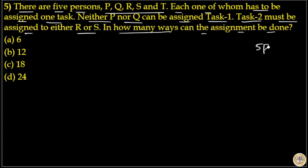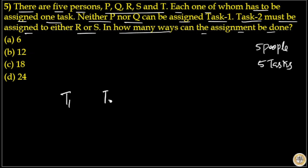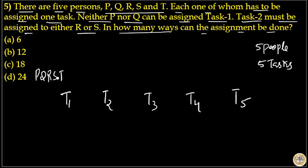Here there are 5 people and there are 5 tasks, because each person should get one task. This is task 1, this is task 2, task 3, task 4 and task 5. And there are 5 people: P, Q, R, S and T.